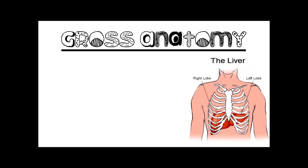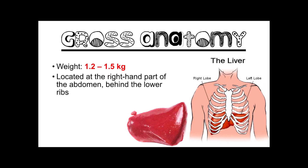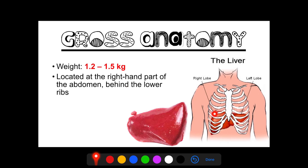Let us begin the discussion with the gross anatomy, or the macroscopic appearance of your liver. This is how the liver looks like and it weighs about 1.2 to 1.5 kilograms. Your liver is about the size of a football, although this can increase to over 10 kilograms, especially in chronic cirrhosis. It is located at the right-hand part of the abdomen behind the lower ribs.